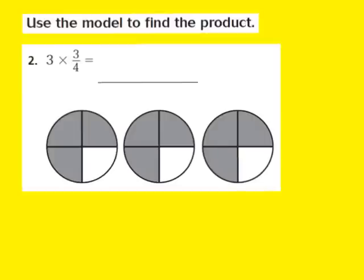Let's take a look at question number 2. The problem is 3 times the fraction 3 fourths. What that means is we're finding 3 groups of the fractional part, and the fractional part is 3 fourths. When you find groups of a fractional part, you're going to use fraction circles to help you model and solve the problem.